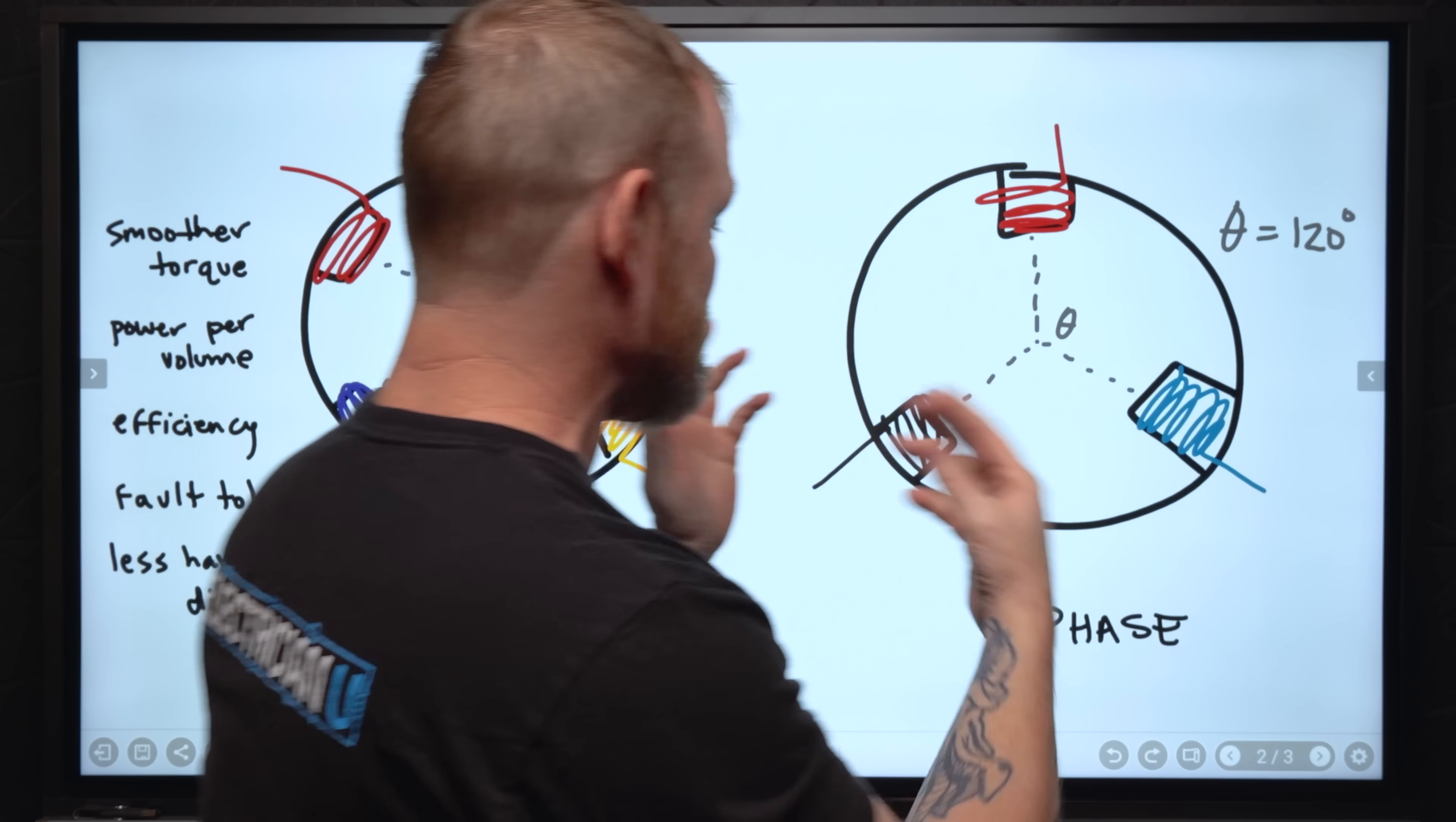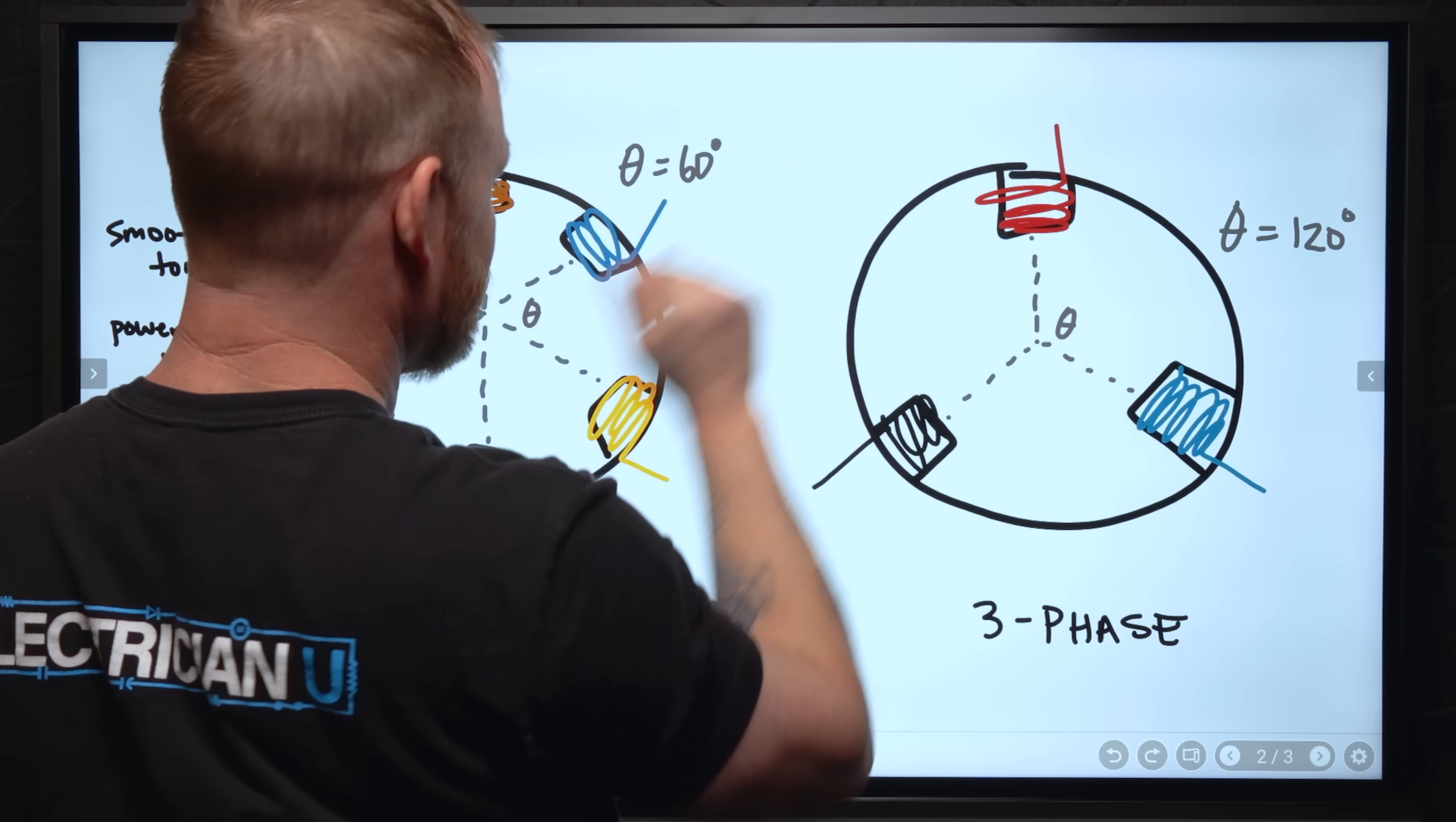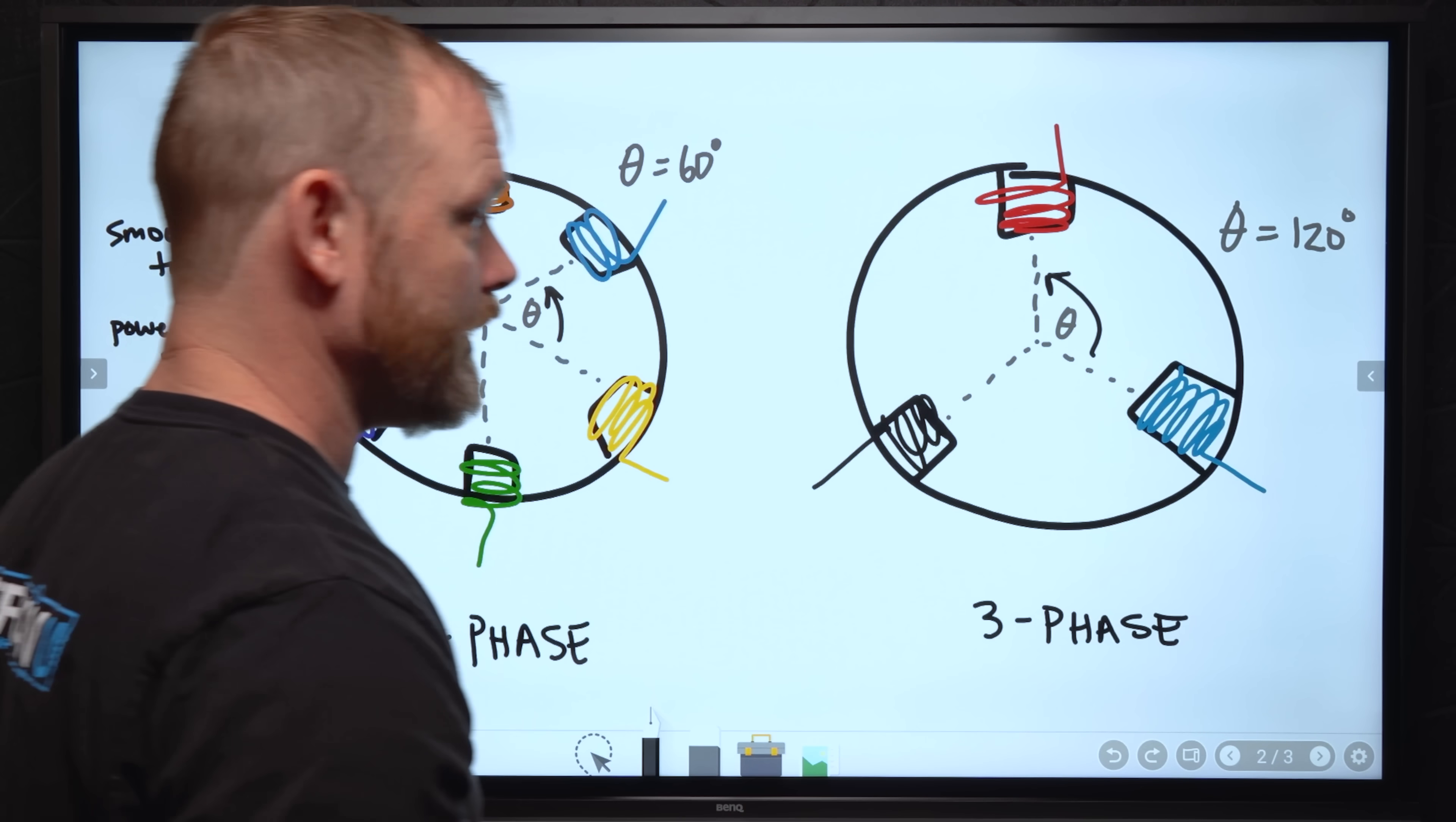So if we look at the windings specifically, three-phase windings, six-phase windings, the only thing that's different is that you take three of these and you add three more and you turn them like that. So we've got a 60 degree separation between any two windings, whereas in three-phase we have 120 degree difference between each one of the windings.